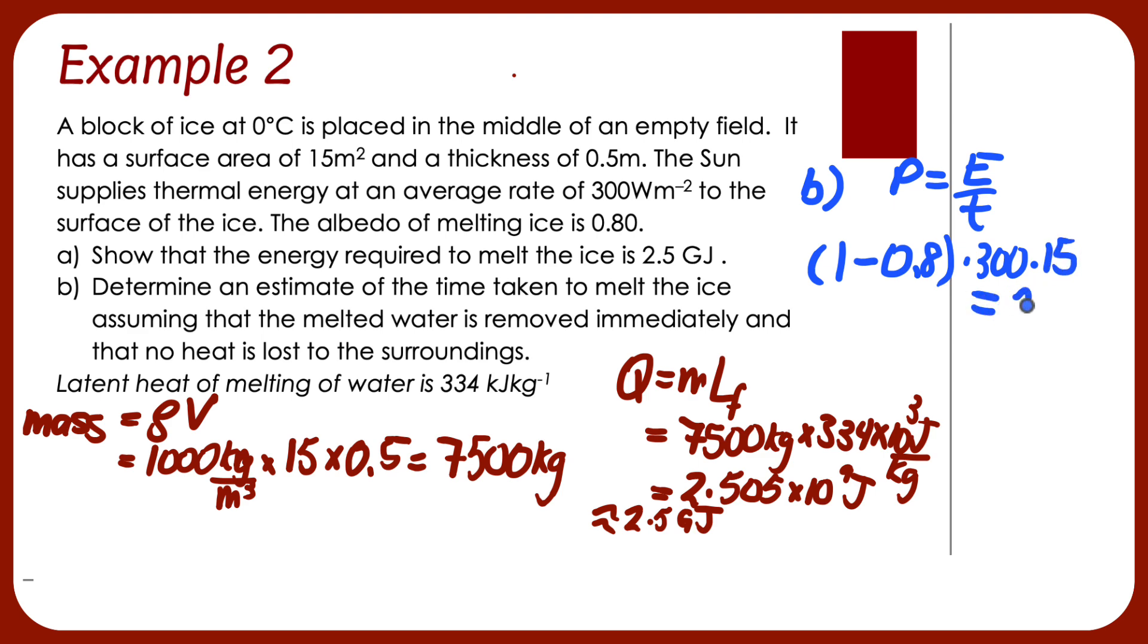That's going to equal my energy, which was 2.505 times 10 to the power 9 joules per time. If I rearrange that, my time will be this value divided by this one. I'm going to get 2.78 times 10 to the power 6 seconds. And if I want to put that into hours, that's going to be 773 hours.